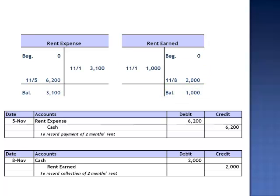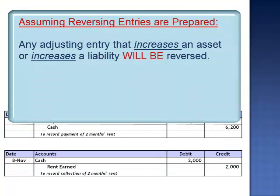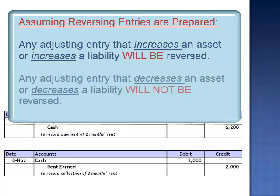So reversing entries are optional. If a company chooses to use reversing entries, they would reverse any adjusting entry that increases the balance in an asset account or increases the balance in a liability account. Adjusting entries that decreased an asset or decreased a liability would not be reversed.